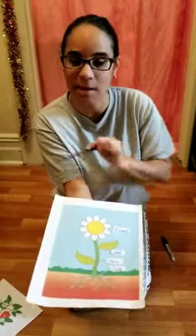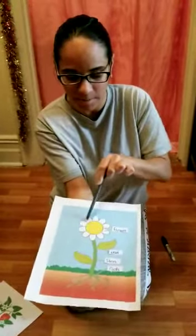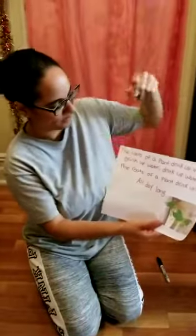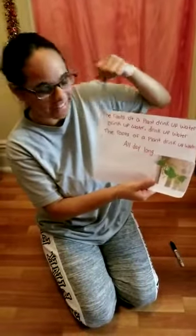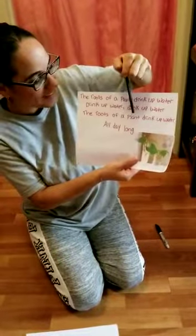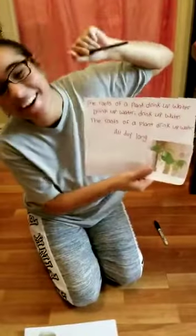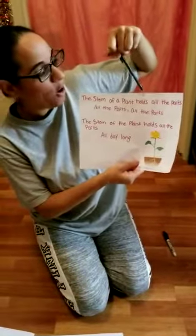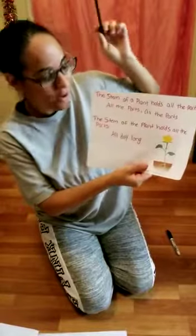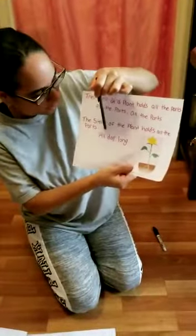And the leaves make some food. And then the flower makes seeds. So now I want to sing our song. Are you ready? Let's begin. The roots of a plant drink up water, drink up water, drink up water. The roots of a plant drink up water all day long. The stem of a plant holds all the parts, all the parts, all the parts. The stem of a plant holds all the parts all day long.